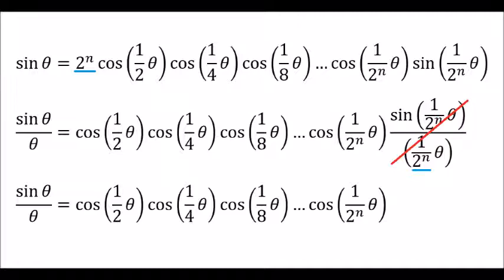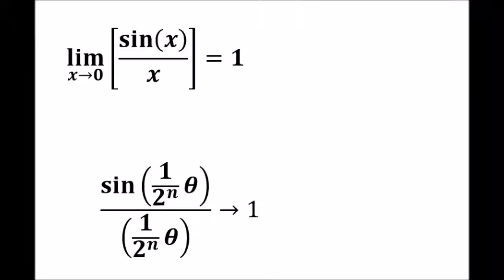That general form is repeated in the first line of this slide. Now we are going to divide both sides by theta. I have manipulated 2 to the n to make it match the argument in sine. That is underlined in blue. It turns out that this can go away. I'll explain why in the next slide. The final result we are interested in is shown in the last line. It is an infinite number of cosine terms multiplied together.